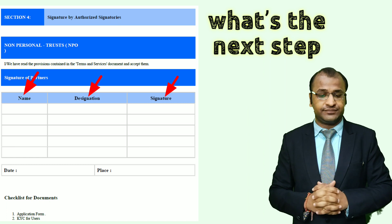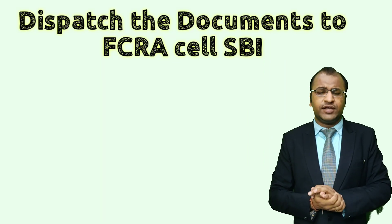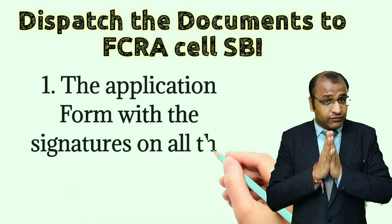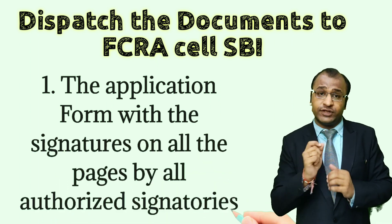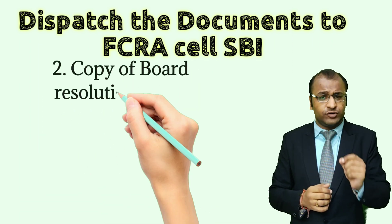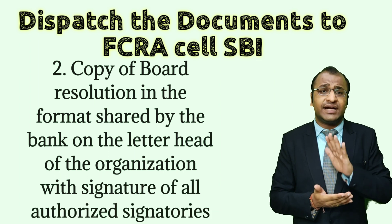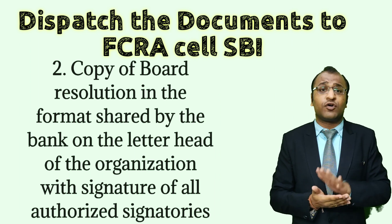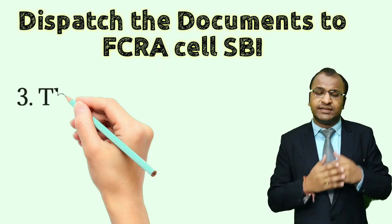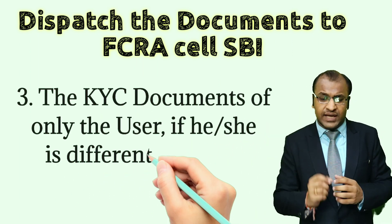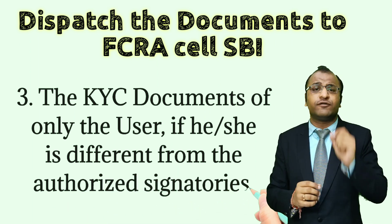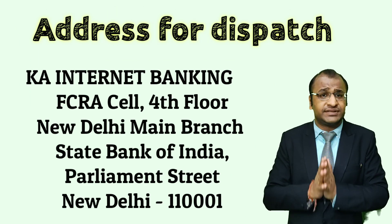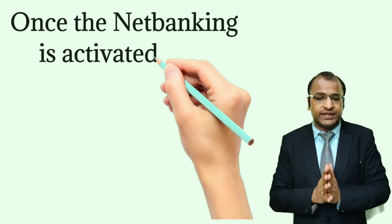Manually fill section 4 of the form, where you need to provide the name and designation of the authorized signatories along with their signatures. As per the instructions mentioned in the mail, you need to dispatch the hard copy of the board resolution — in the format shared by the bank — on the letterhead of the organization with the signatures of all authorized signatories. We have attached the copy of the board resolution in the description. Also include the KYC documents of the user, but only if he or she is different from the authorized signatories. The documents need to be dispatched to the address displayed on the screen.